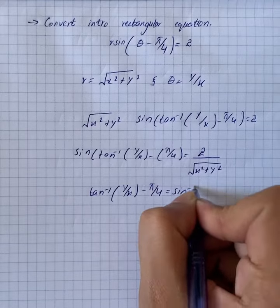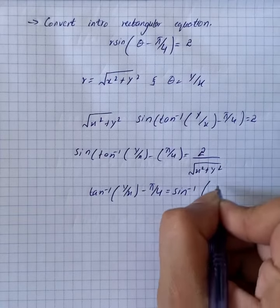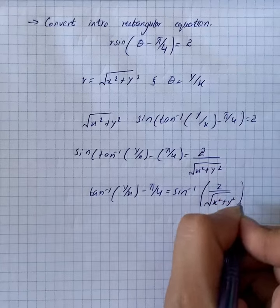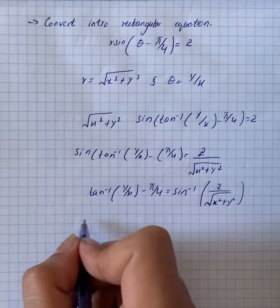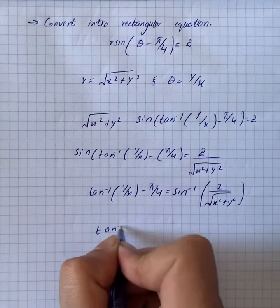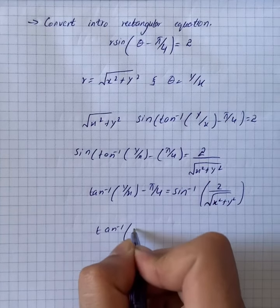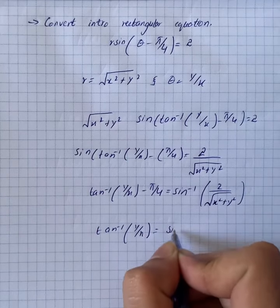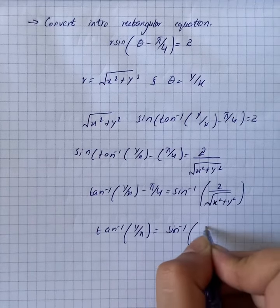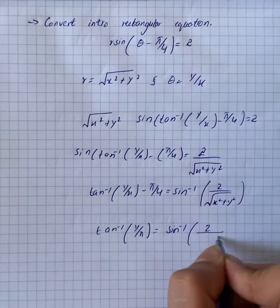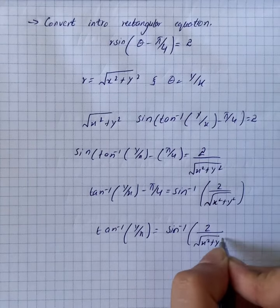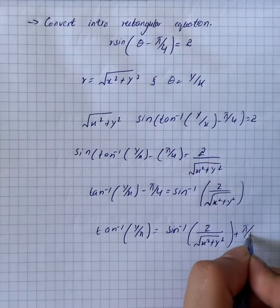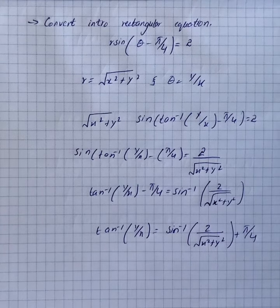Therefore, arctan(y/x) minus π/4 equals sin⁻¹(2 divided by the square root of x squared plus y squared). Rearranging, arctan(y/x) equals sin⁻¹(2 over the square root of x squared plus y squared) plus π/4, and this is our solution.